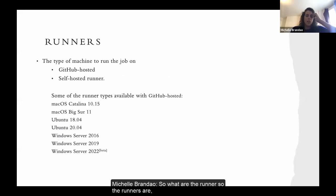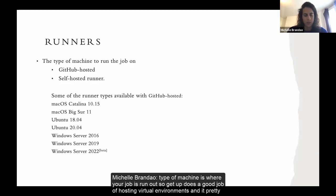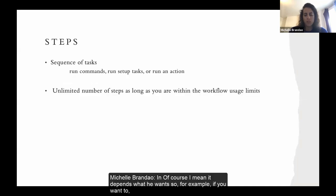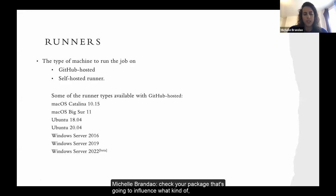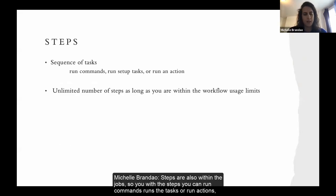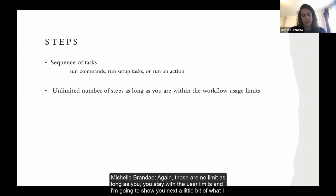Runners are the type of machines where your job runs. GitHub does a great job hosting virtual environments and covers all major machines: Mac, Linux, and Windows. You can also create your own custom runner. What kind of runner you need depends on your goal — for example, if you're testing a package, that will influence which runner is appropriate. Steps are within jobs, and with steps you can run commands, tasks, or actions, as long as you stay within GitHub's usage limits.